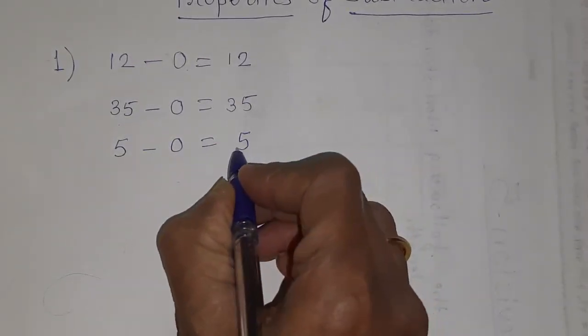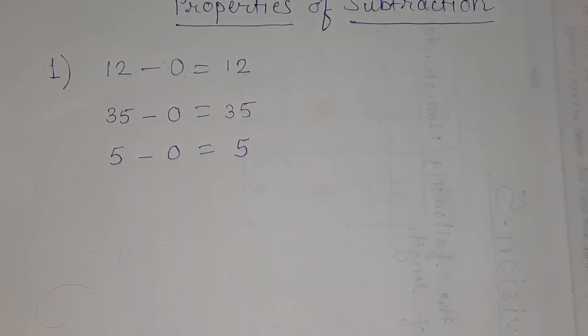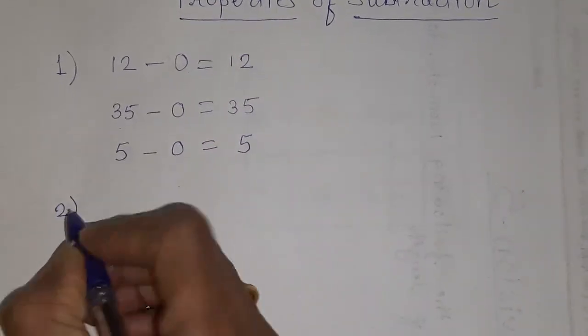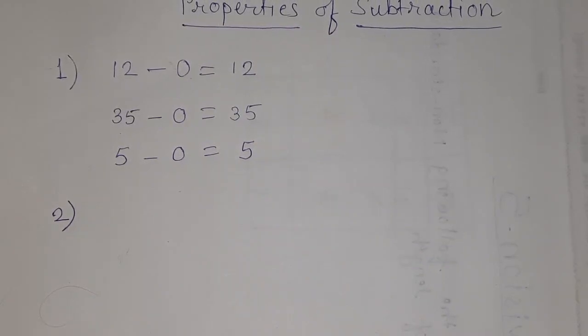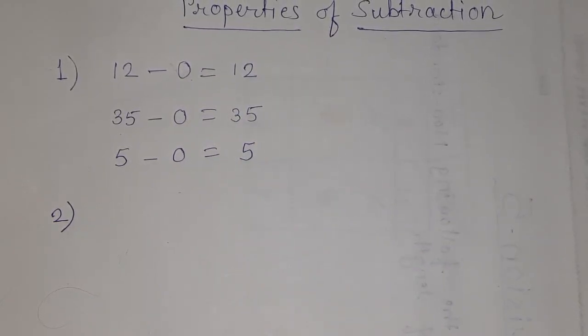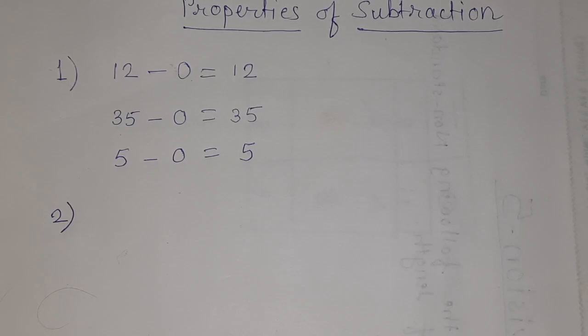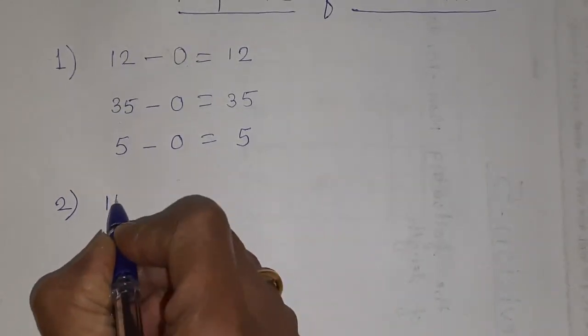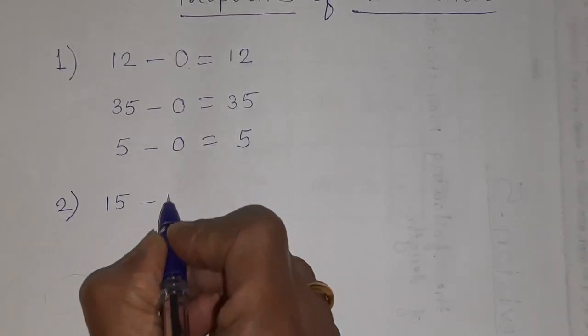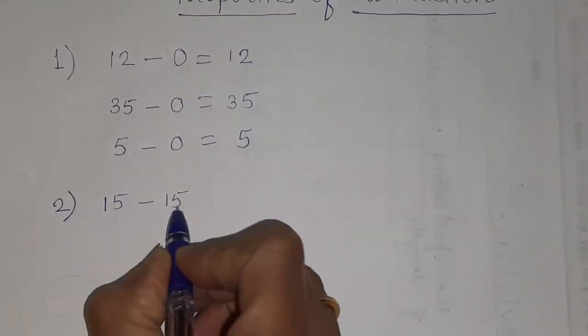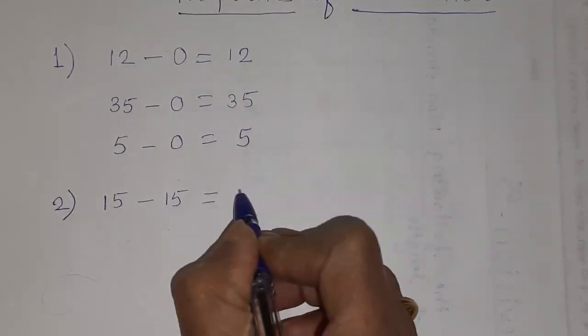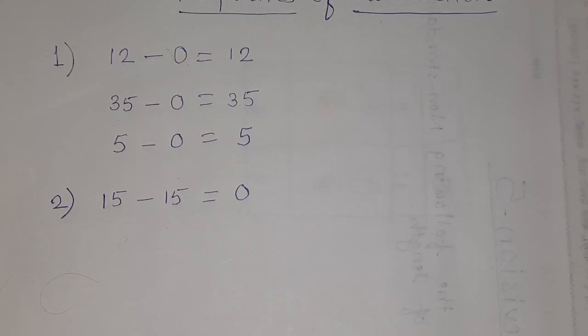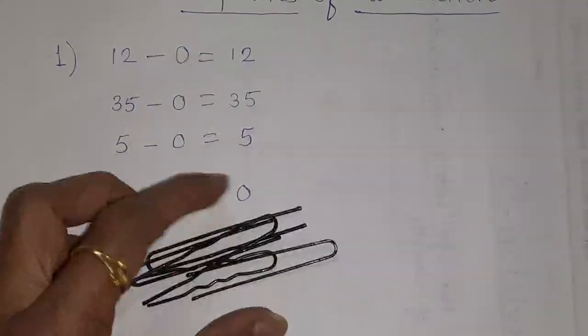Our second property is, when we are subtracting same number from the number itself. Means what? Now, I want to subtract 15 number from 15. So, what I will get? I will get 0. The same way we are seeing here. These are 5 pins.